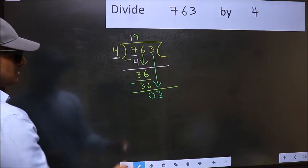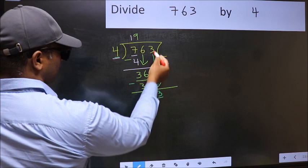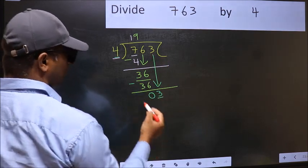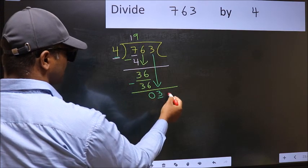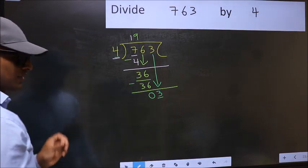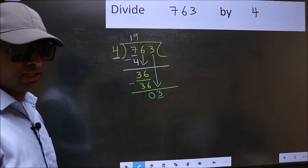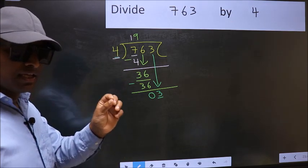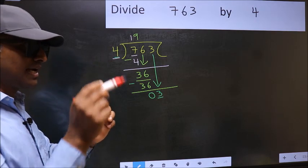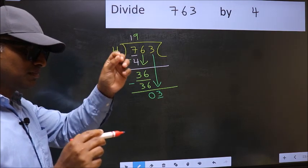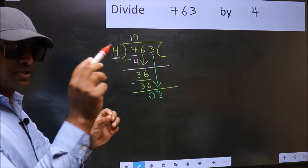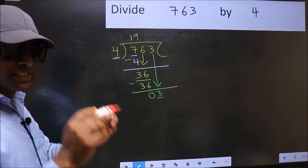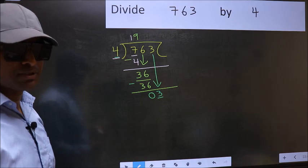Why is it wrong? Because just now you brought this number down. And in the same step, you want to put a dot and take 0. Bring the number down and put a dot and take 0. Both at the same step. You are not supposed to do.